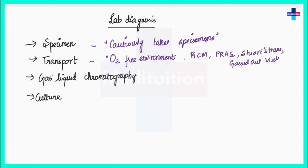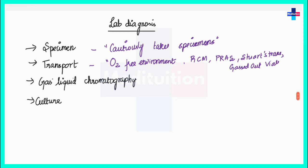We can also perform gas liquid chromatography to get presumptive information about anaerobes from the specimen. Ultraviolet examination is useful since some species like Prevotella melaninogenica show bright red fluorescence. Microscopy can also be used, but exposure to oxygen should be kept to a minimum.